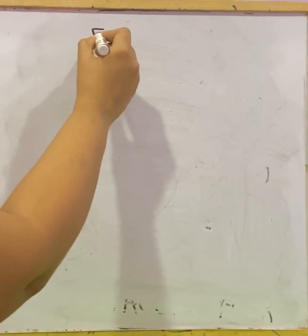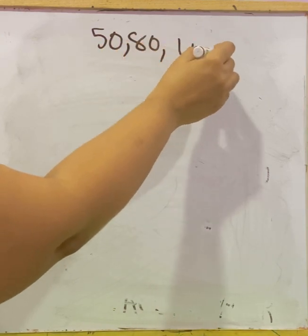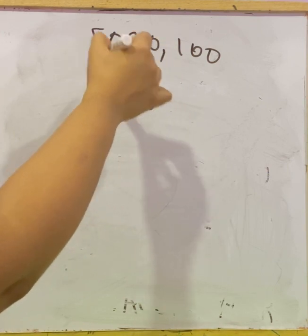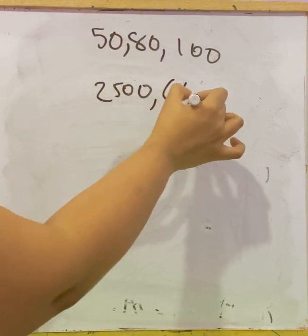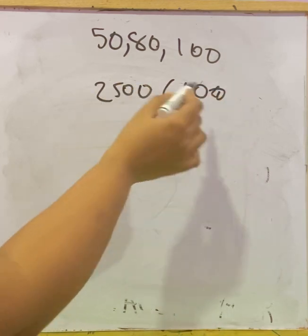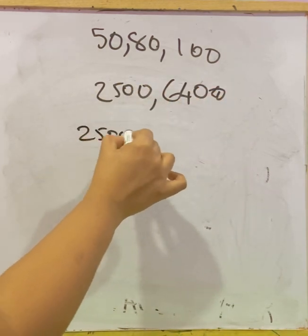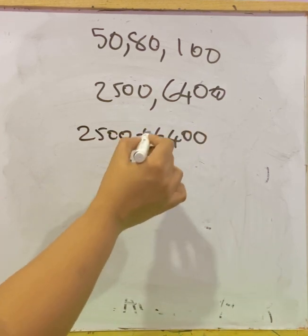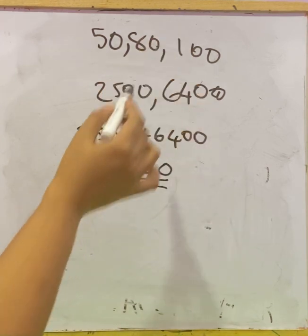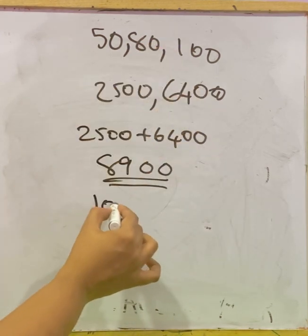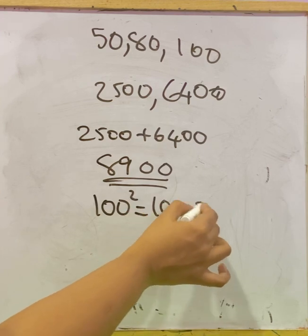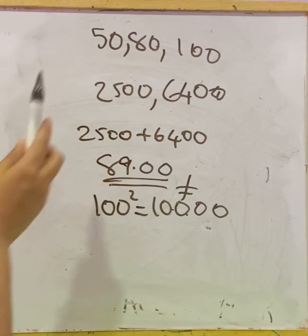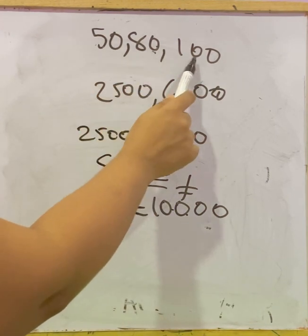Next values are 50, 80, and 100. So 50² = 2500, 80² = 6400. Adding: 2500 + 6400 = 8900. Now 100² = 10000. Since 8900 ≠ 10000, adding the squares of the two smaller numbers does not give the square of the largest number, so this is not a right triangle.